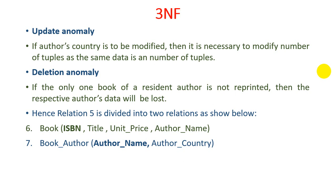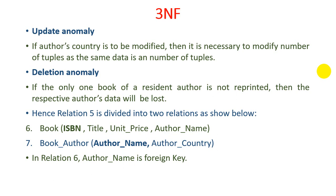Now we can say that relation R2, relation R4, relation R6, and relation R7 are in the form of third normal form. In relation R6, author name is a foreign key, so it directly communicates with book_author where author name is the primary key. I hope you are clear about all three normal forms — first NF, second NF, and third NF — with the help of this example. I hope you enjoy this lecture. If you have any doubt regarding any of the three normal forms, please go through this video lecture. Thank you.